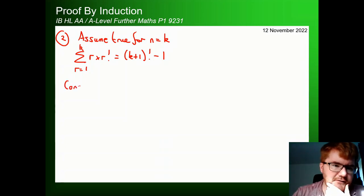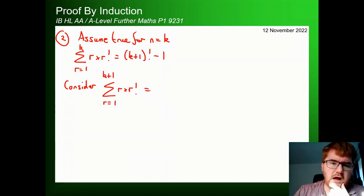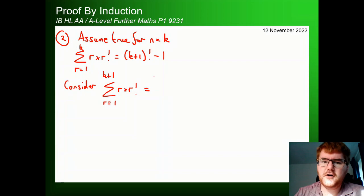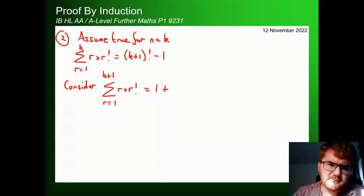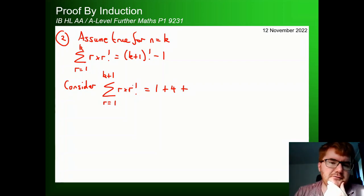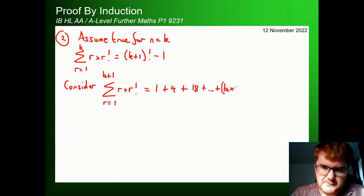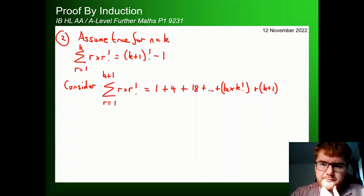Writing out the series: 1×1! + 2×2! + 3×3! + … + k·k! + (k+1)·(k+1)!. The target — replacing k with k+1 in the formula — is (k+1+1)!−1 = (k+2)!−1. So that's what we're aiming for. From the assumption step, we replace the sum up to k with (k+1)!−1, then add the (k+1)th term: (k+1)·(k+1)!.